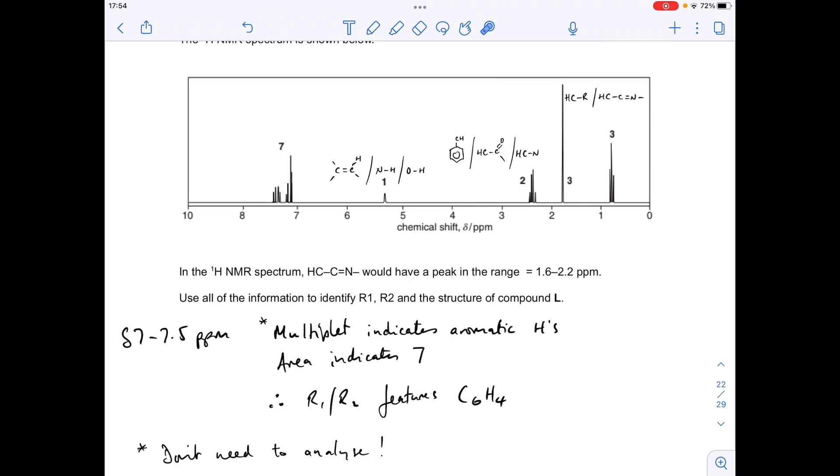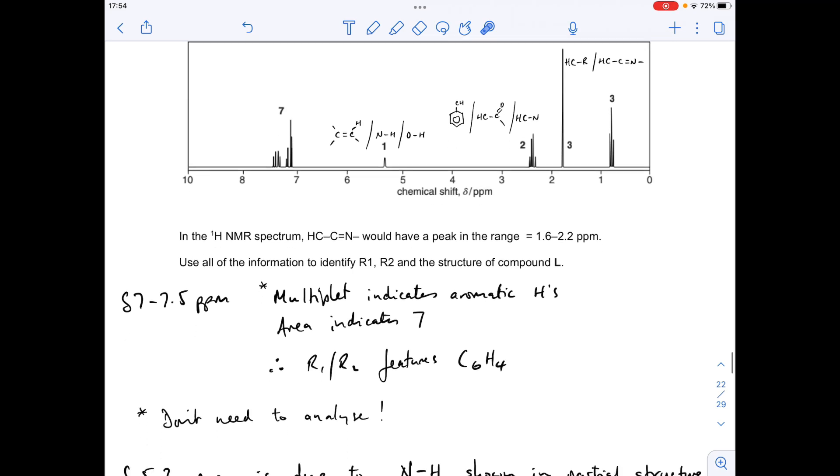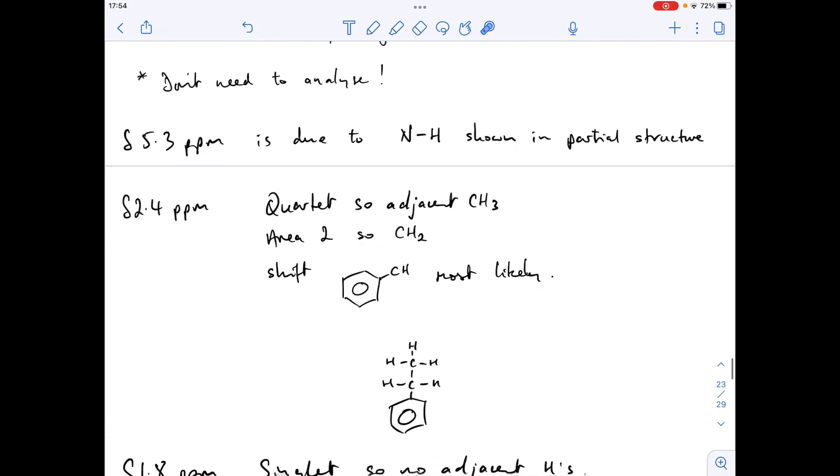Move on to the last signal now. So this is around about delta 0.8 ppm. It's a triplet, so there's an adjacent CH2. It's got an area of 3, so it's being caused by a CH3 group. And the shift is an H C to R. So that's kind of confirmation of what we already knew. Let's just find it there. So we're now talking about these protons here. They've caused that signal. There's three of them. They're in the HCR environment, and they're adjacent to two. And that's why these have been split into a triplet.